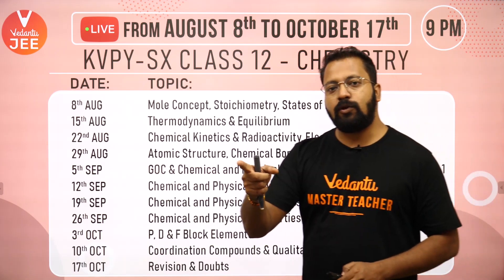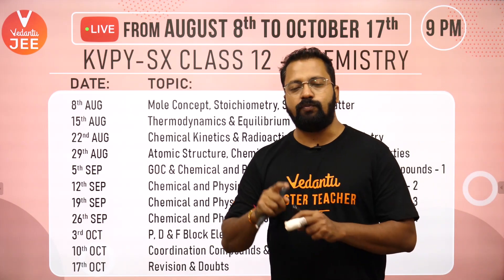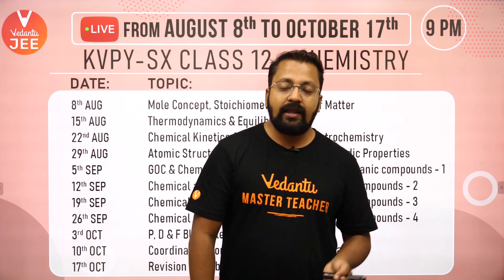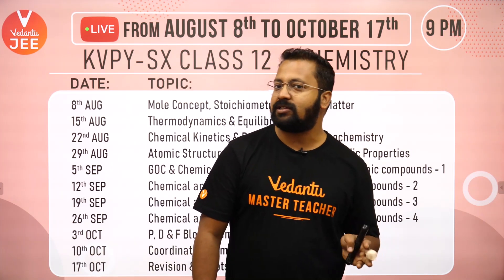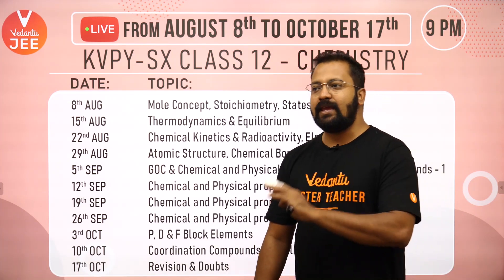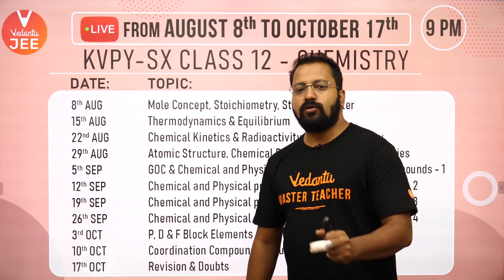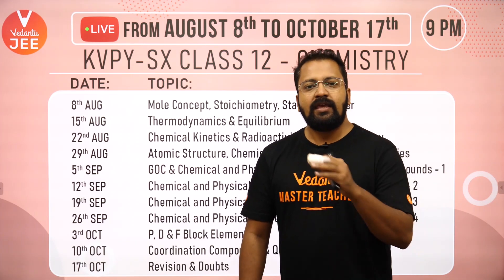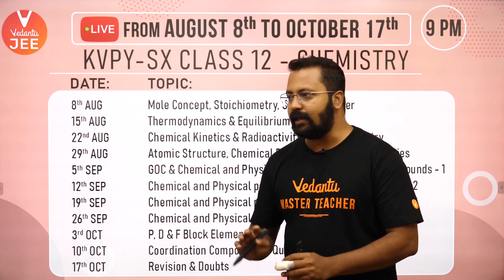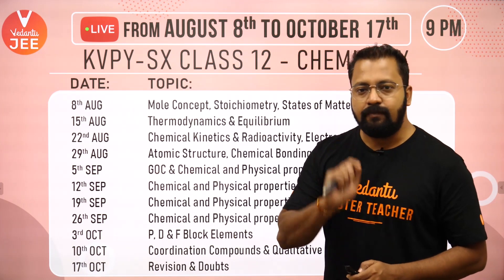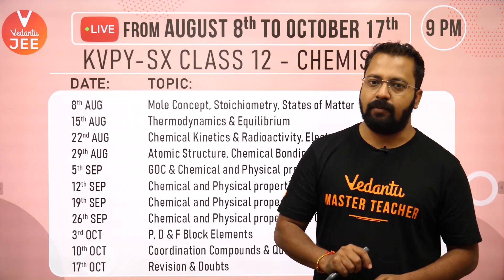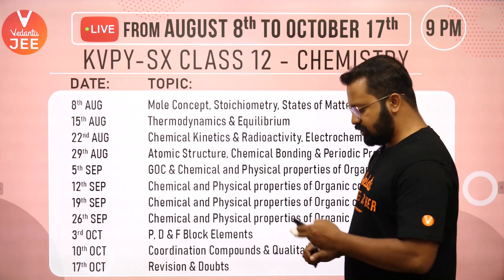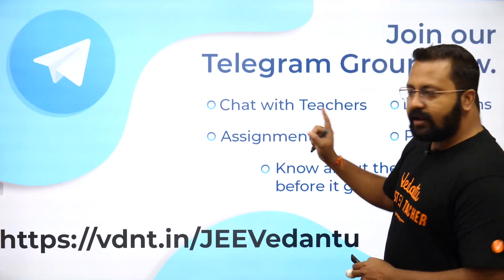For equilibrium — both chemical and ionic — the questions are very simple. People who fear ionic equilibrium should not, because questions are asked primarily on pH calculations, pKa, pKb, and at most on buffers. They do not go as far as indicators or salt hydrolysis. For chemical equilibrium, Le Chatelier's principle and calculation of equilibrium constant are important. With this idea, let's start today's session — and please join the Telegram group to stay updated.